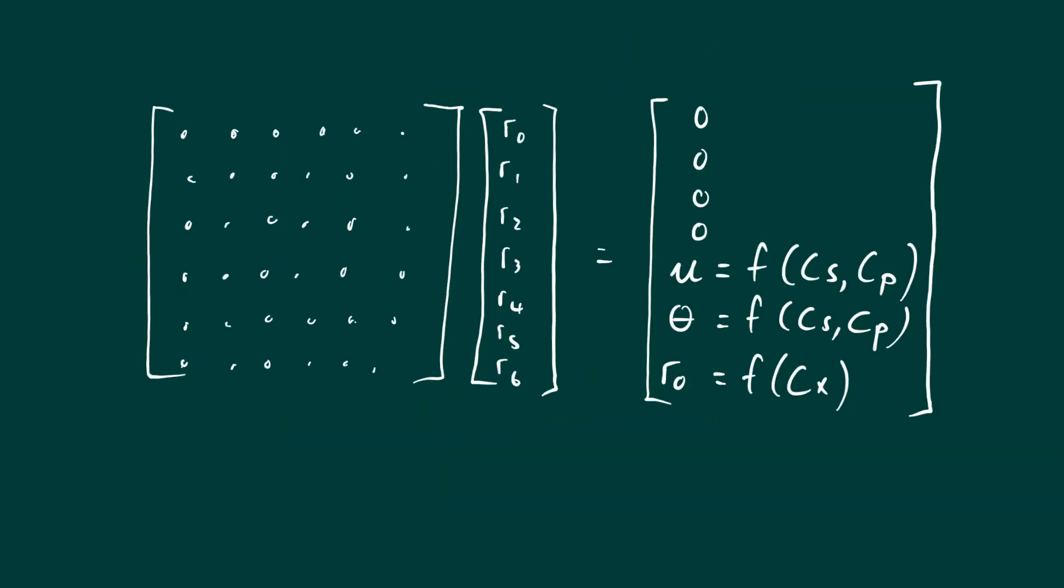Don't forget that setting up that stoichiometric matrix is the result from all the work we did in chapter five. This is what it's all about. We set up our stoichiometric matrix with our energy balance and NADH balances, and basically what we solve for is rates. This is what we're interested in because if we know what the rates are, we can model the fermenter.